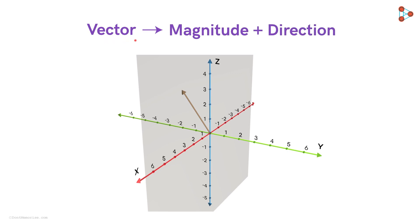A vector is represented by an arrow. Where it points tells you the direction of that vector, and the length of the arrow represents the magnitude of that vector.